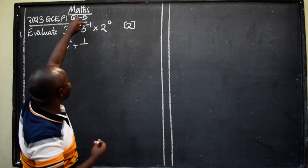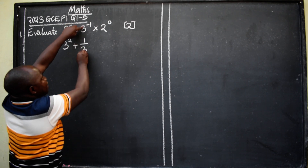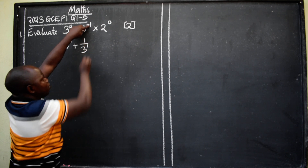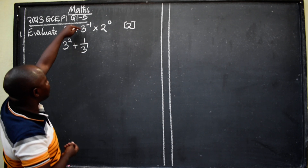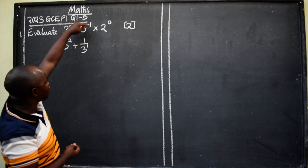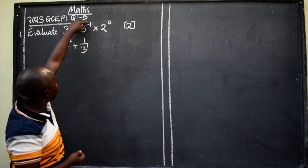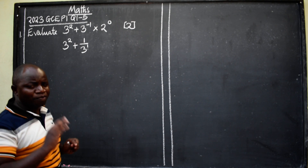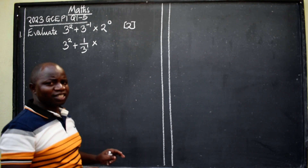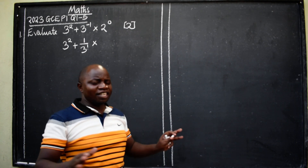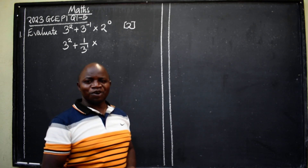So 3 to the power negative 1 means 1 over 3 — the negative has disappeared, changed from a negative power to a positive power. Then 2 to the power 0: the law says any number raised to the power zero is always equal to 1.